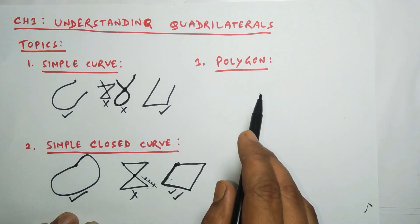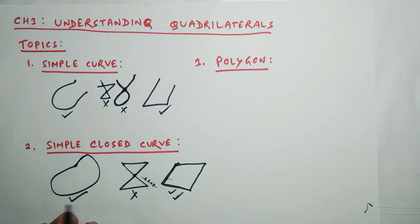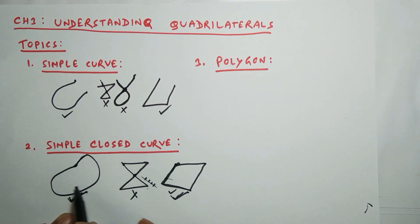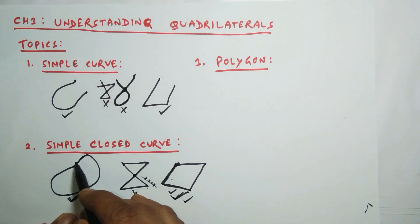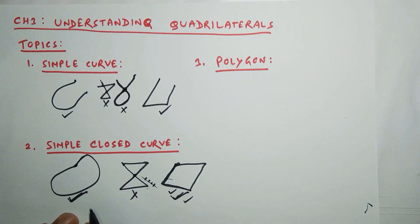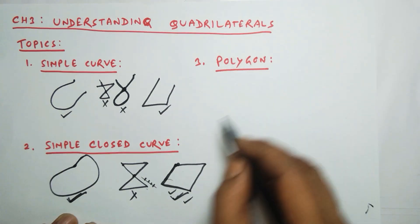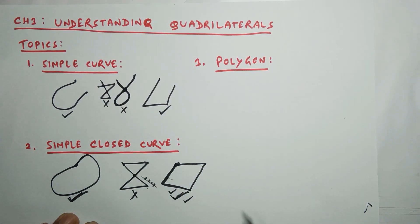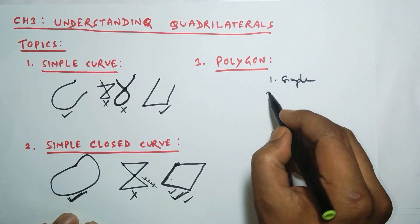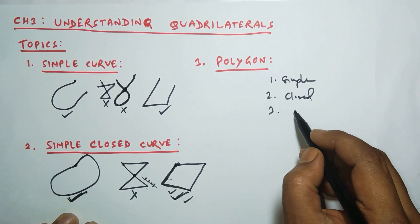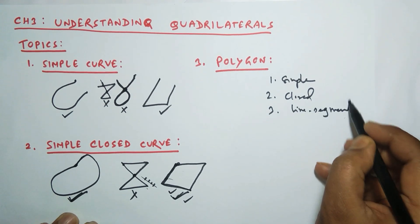Now, a polygon: a simple closed curve which is entirely made of line segments is a polygon. Look at these two simple closed curves. The second one is made of line segments, so it is a polygon. The first one is not a polygon because although it is a simple closed curve, it is not made of line segments. For a polygon: number one, it should be a simple curve; number two, it should be closed; number three, it should be entirely made of line segments.